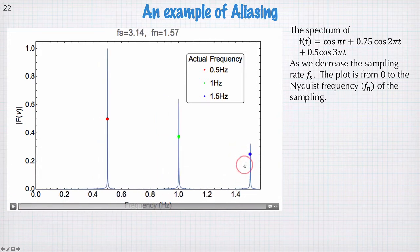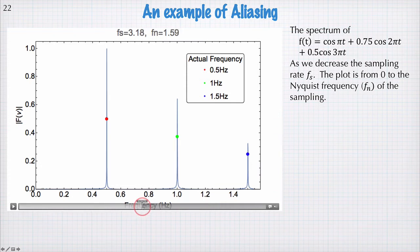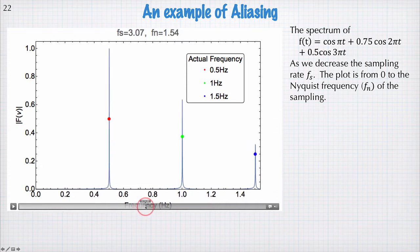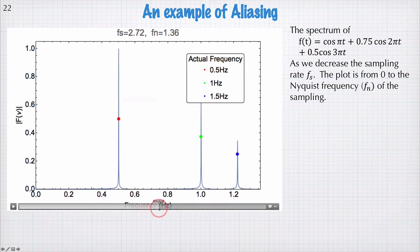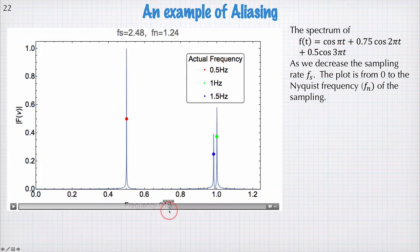When we get to this point here, this highest frequency is approaching the Nyquist frequency. What's going to happen? Well, as we go through the Nyquist frequency, that peak reflects off that wall and starts travelling back.